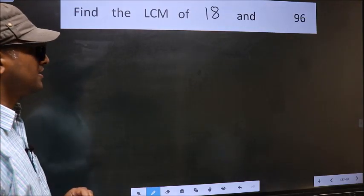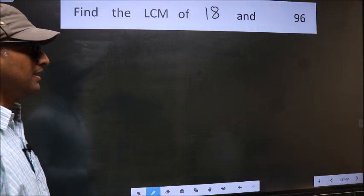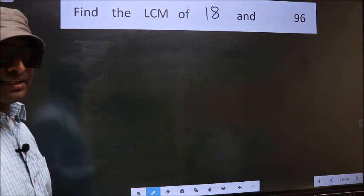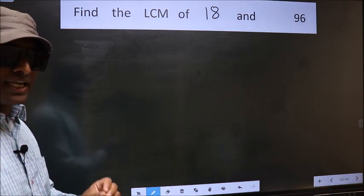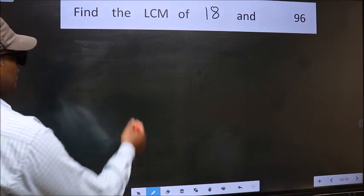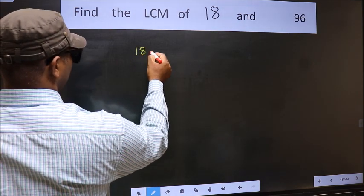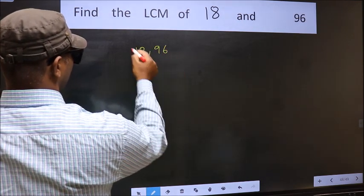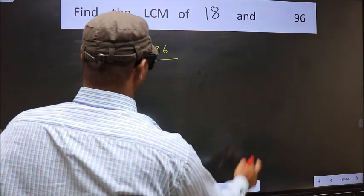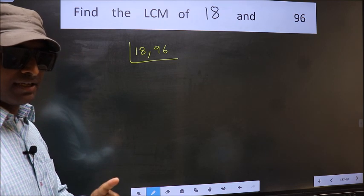Find the LCM of 18 and 96. To find the LCM, first we should frame it in this way: 18 and 96. This is our step 1.